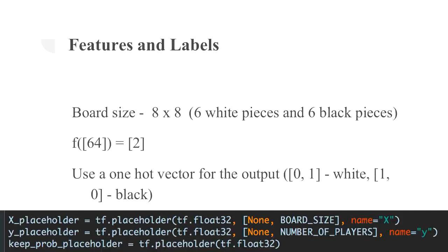Here are the features and labels in more detail. The input is an 8x8 array representing the chessboard. I store the pieces as their worth — a white rook is stored as 5, a black rook as negative 5, a white pawn as 1, a black pawn as negative 1. So it's an 8x8 array, mostly zeros since most positions are unoccupied, with some positive and negative numbers. The output is a one-hot vector with two elements: zero-one means white, and one-zero means black.